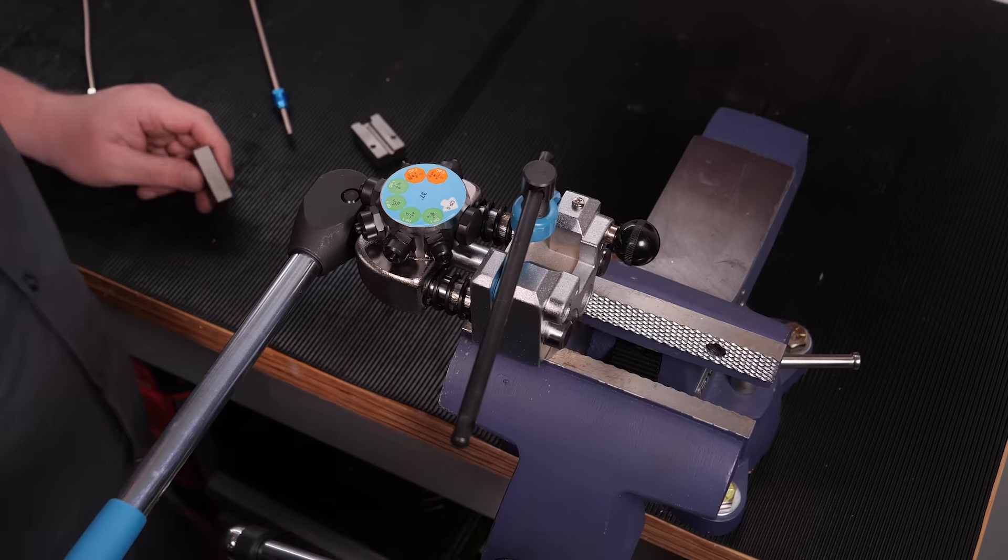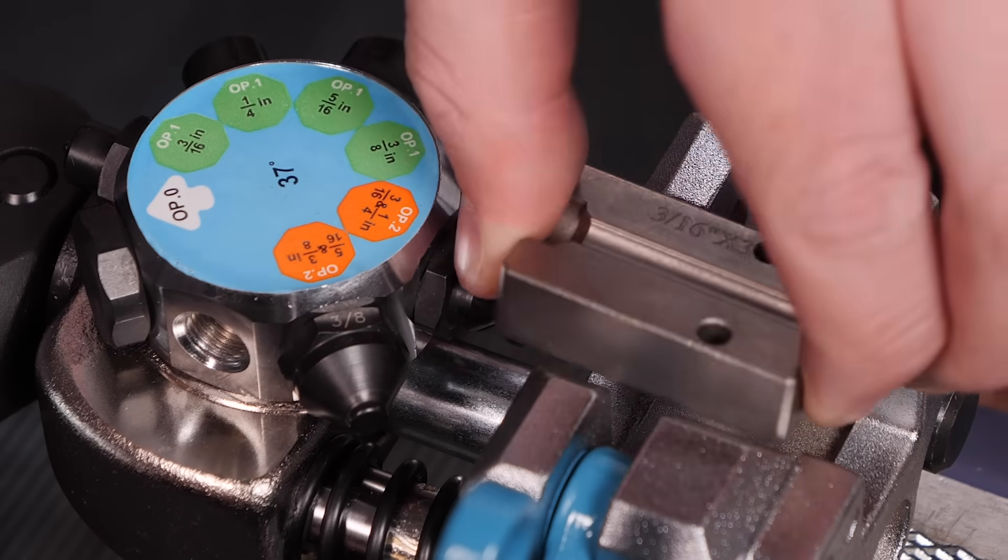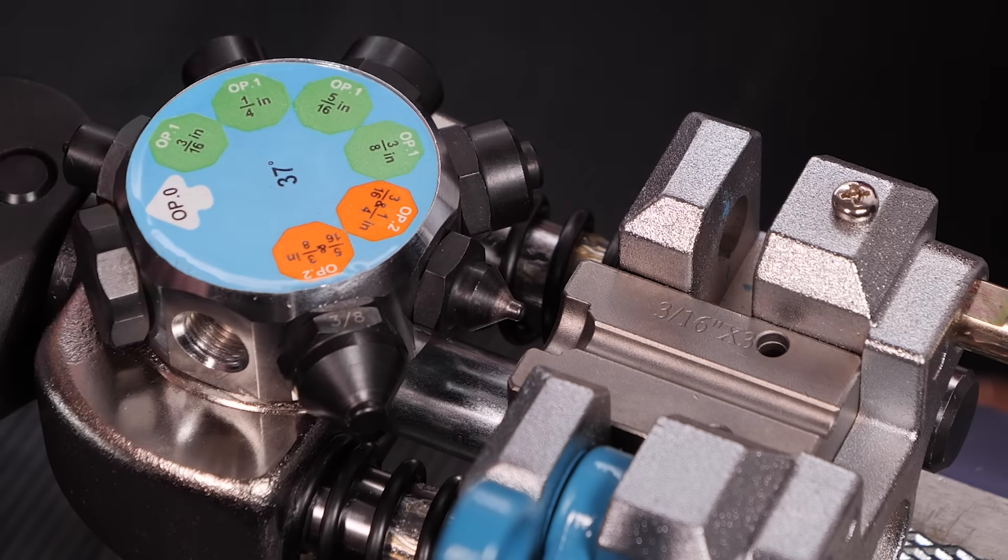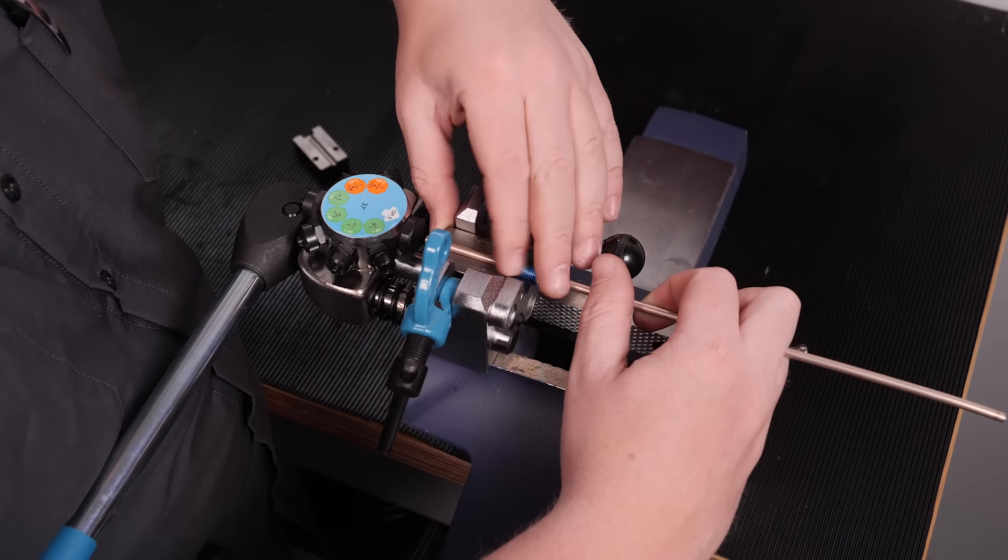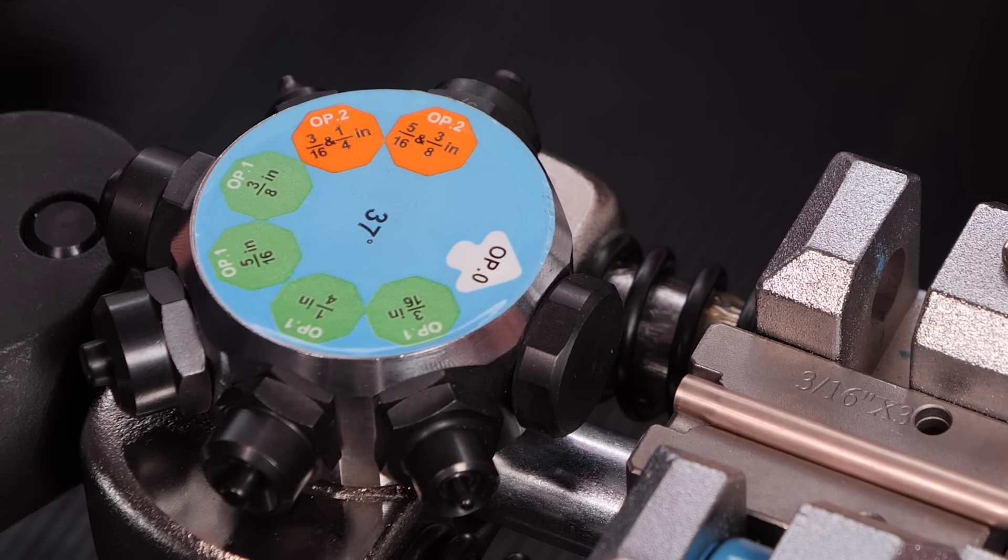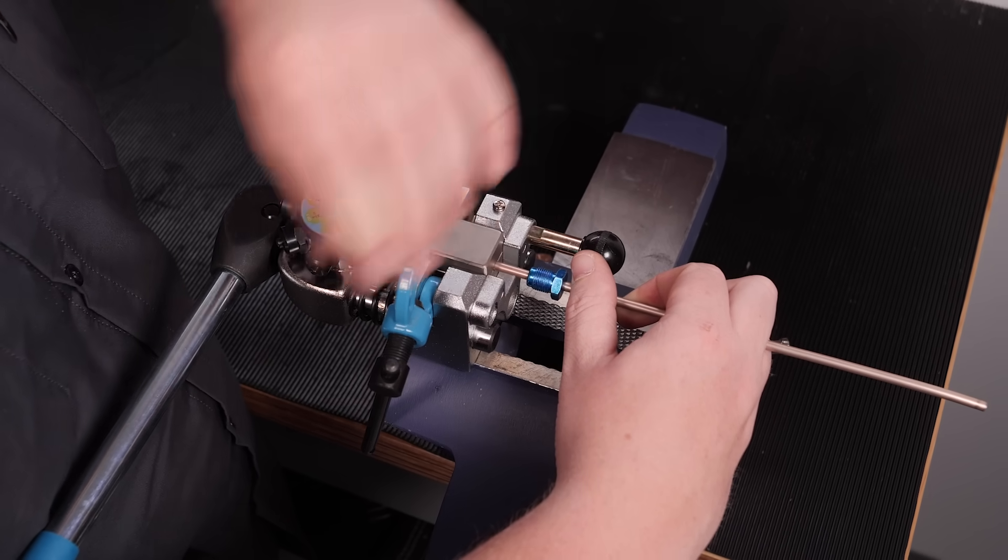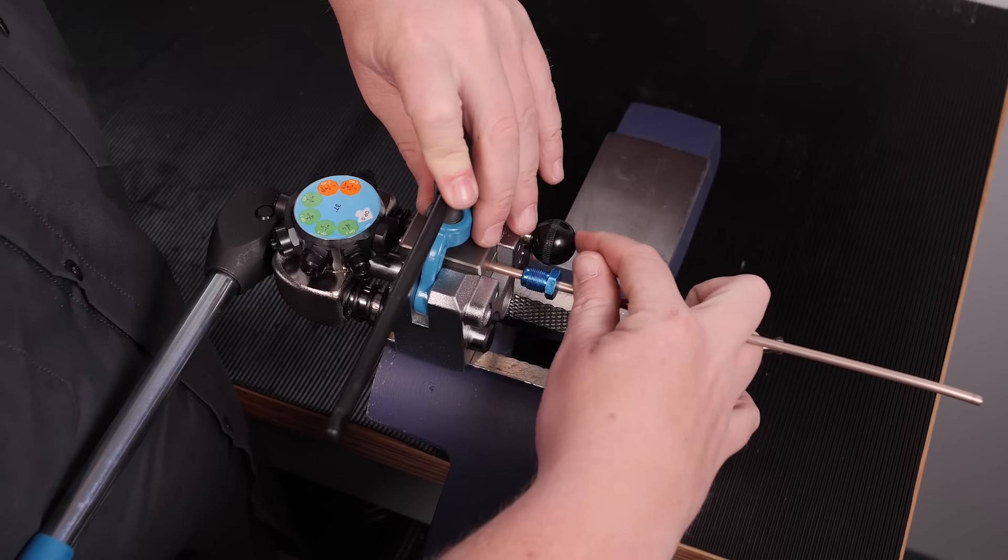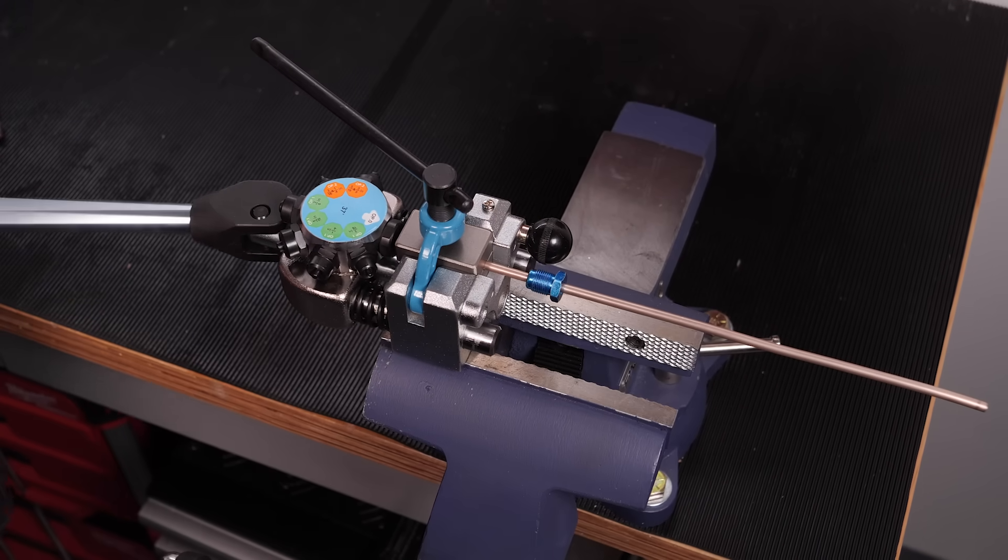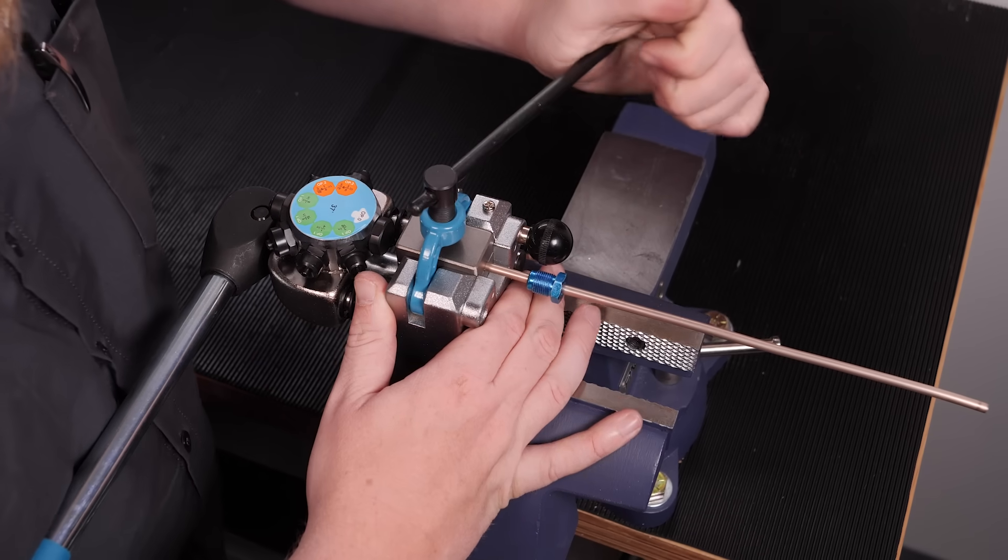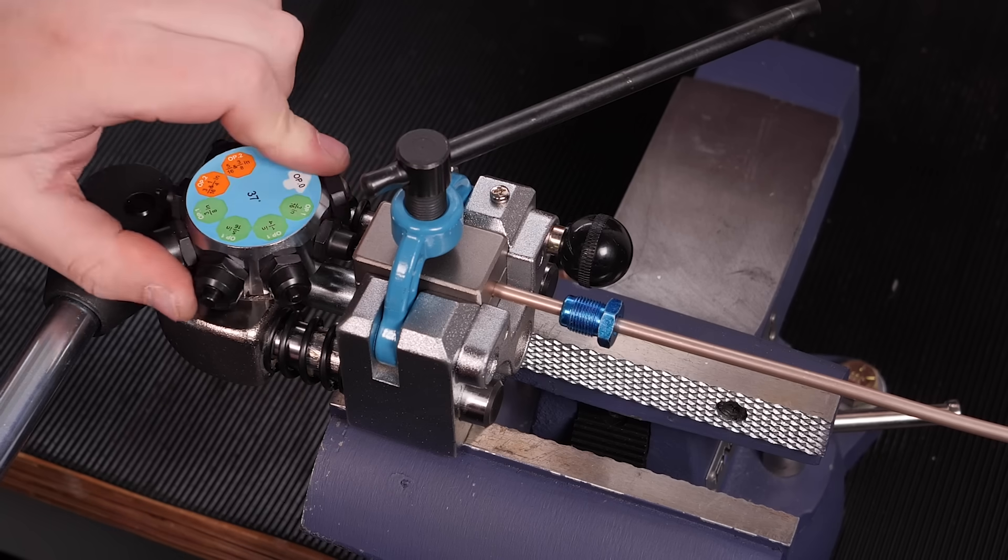Doing a double flare is just as easy as a single. Open it up like before, insert our die, insert our line with our fitting already on it, which is very important. Make sure it's at operation number zero, put our die on top, close our holder, snug that up a little, use operation zero, make sure it's flush, and then we'll tighten it the rest of the way up. And then we'll flip it to operation one.